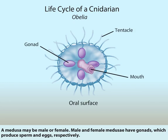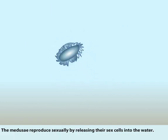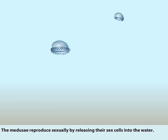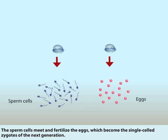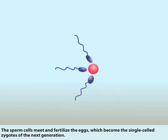A Medusa may be male or female. Male and female Medusae have gonads which produce sperm and eggs, respectively. The Medusae reproduce sexually by releasing their sex cells into the water. The sperm cells meet and fertilize the eggs, which become the single-celled zygotes of the next generation.